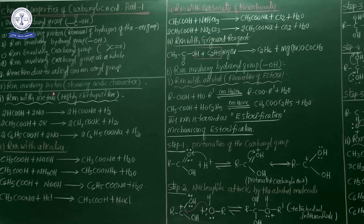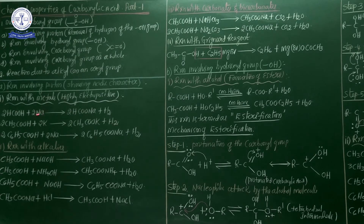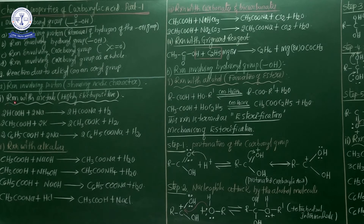First category: reactions involving proton, showing acidic character. From this category, the first chemical property is reactions with metals. Highly electropositive metals, whenever treated with carboxylic acid, produce specific products. Monocarboxylic acid reacted with strongly electropositive metals such as sodium, potassium, calcium, zinc, etc., releases hydrogen gas and forms a salt.